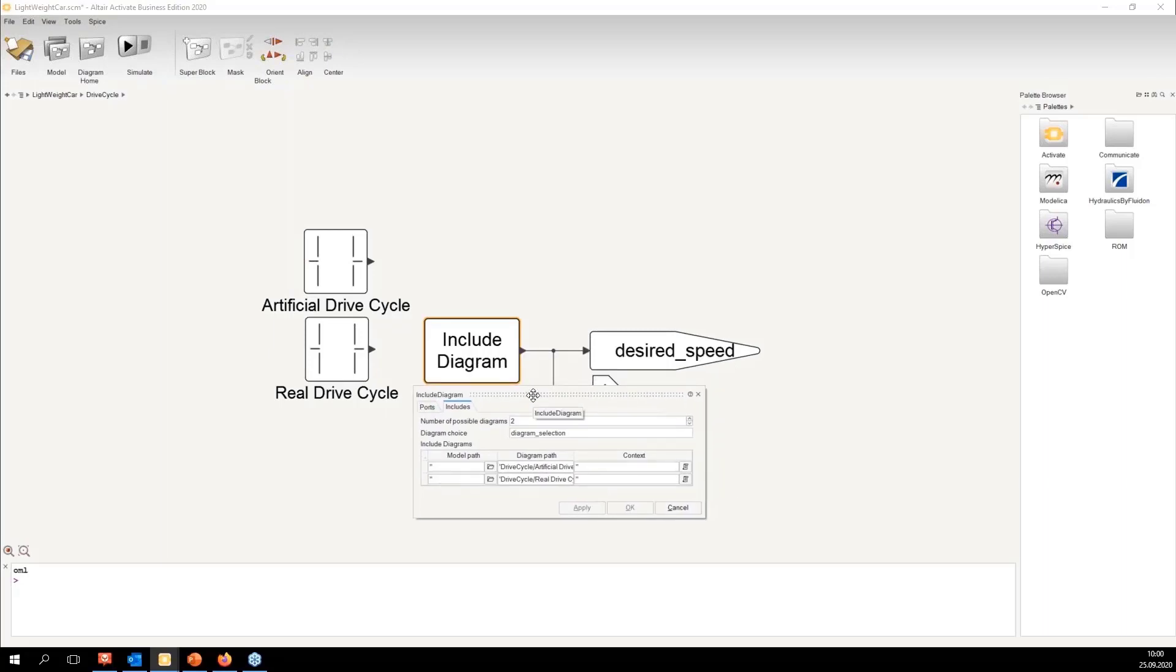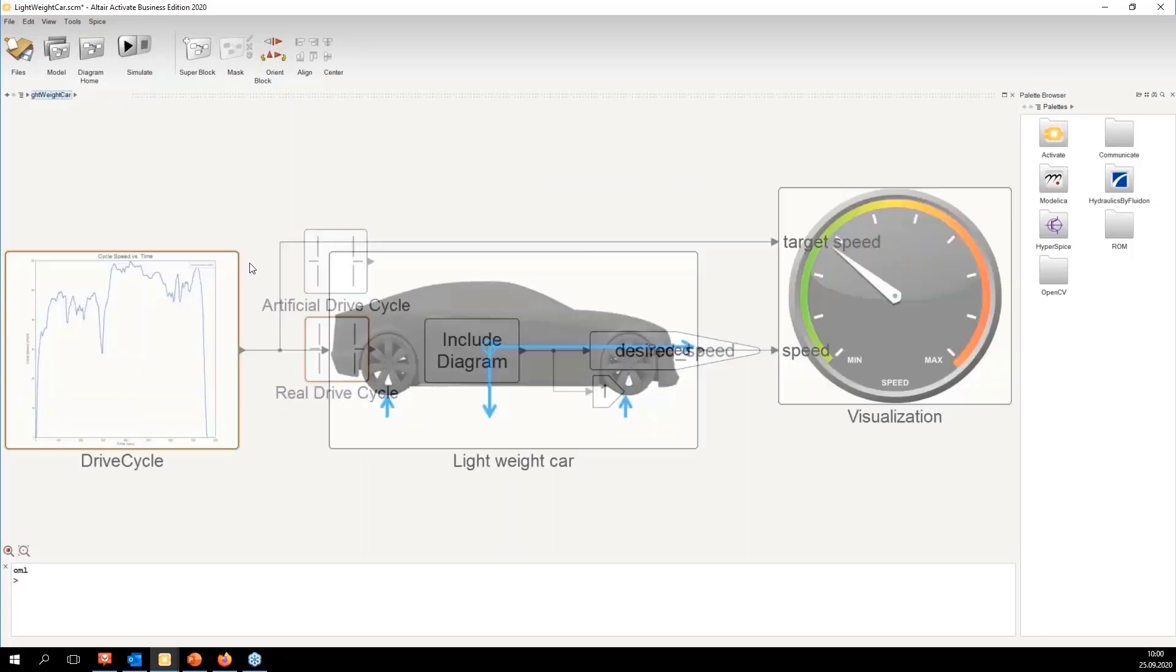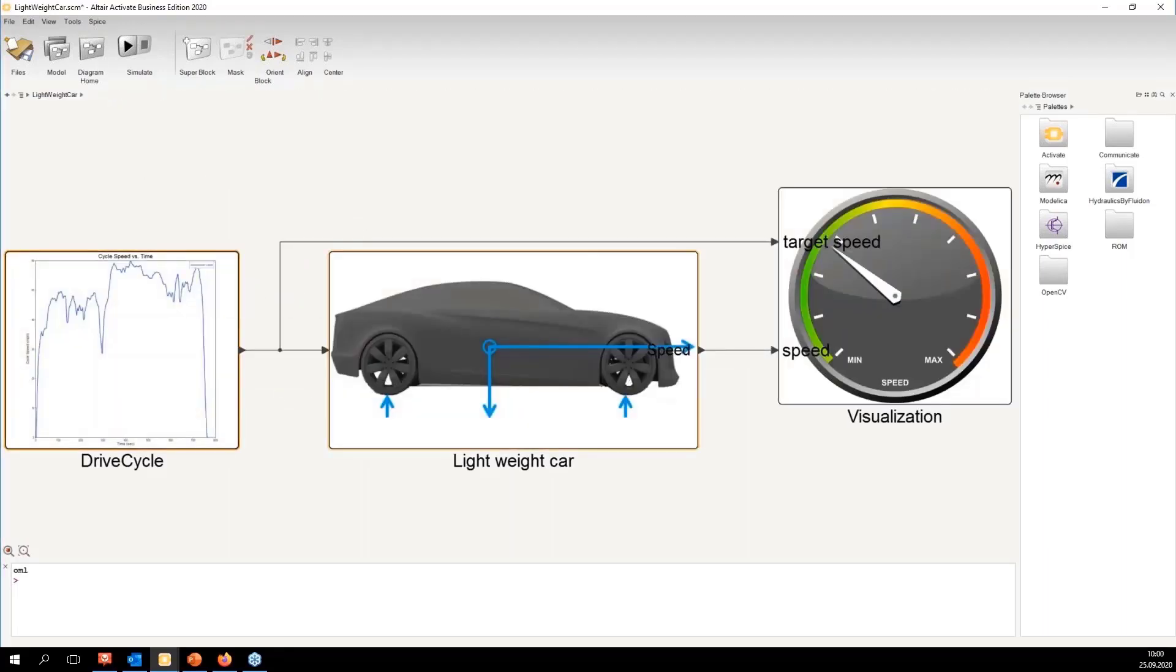We have chosen with this include diagram block. We can use a bit of logic. We can programmatically control our model. As you can see at the diagram choice here there is diagram selection.